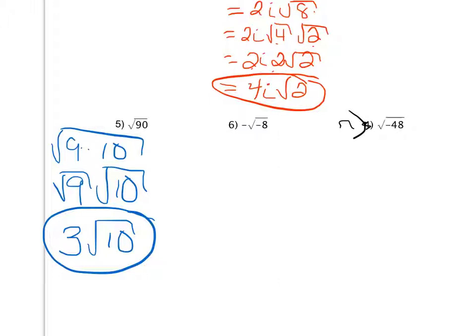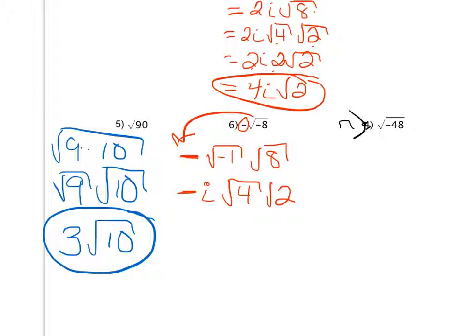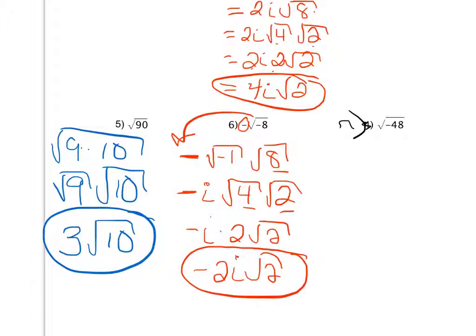Looking at example 6, I have the negative square root of negative 8. That negative out front is going to drop down, and I see there's a negative underneath, so I write that as the square root of negative 1 times the square root of 8. The square root of 8 is divisible by 4, so I say this is negative i times the square root of 4 times the square root of 2, since 4 times 2 is 8. The square root of 4 is just 2, so I get negative i times 2 times the square root of 2, which is the same as negative 2i times the square root of 2. Since 2 is not divisible by any other perfect squares and there is no negative, I'm done.